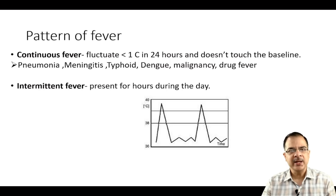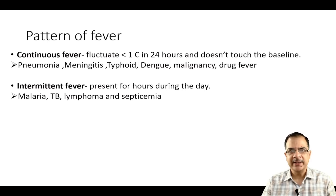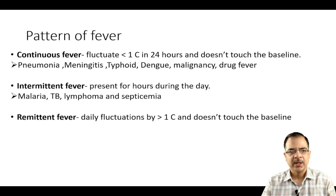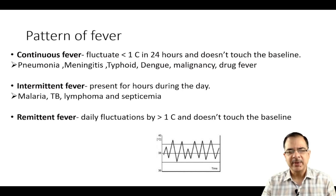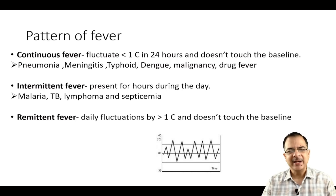The second fever pattern is intermittent fever — fever is present for some hours in a day and it touches the baseline. Important causes include malaria, tuberculosis, lymphoma, and septicemia. Third is remittent fever, where daily fluctuation is more than one degree Celsius (some textbooks say more than two degrees Celsius) and it does not touch the baseline.